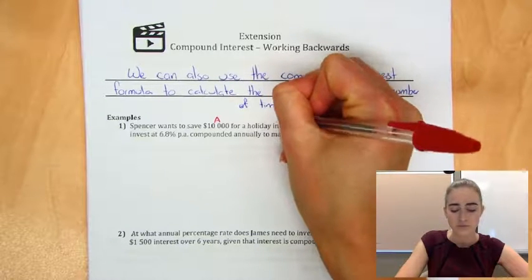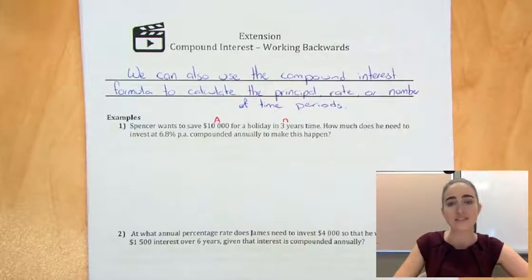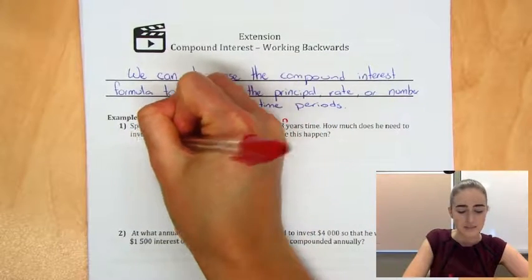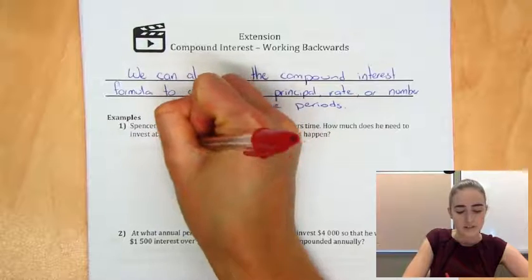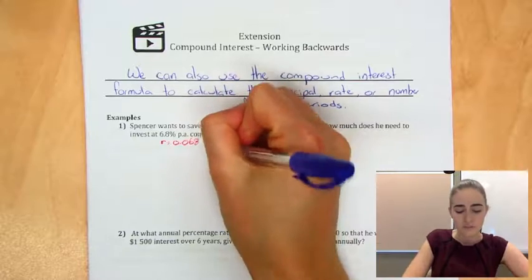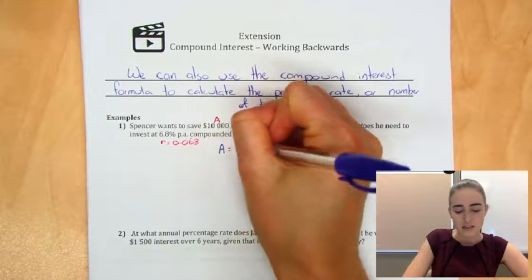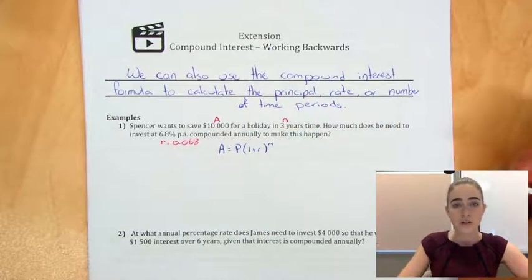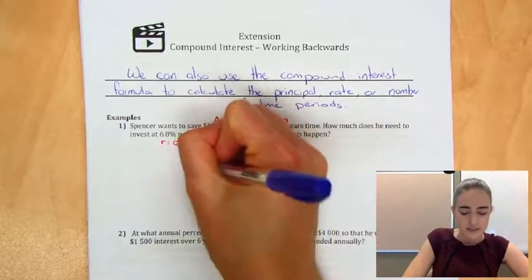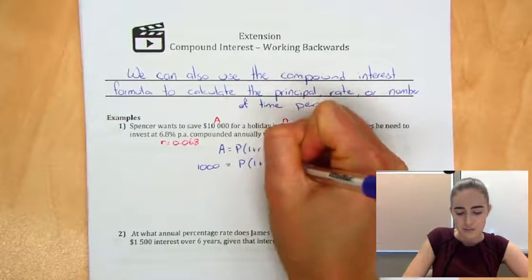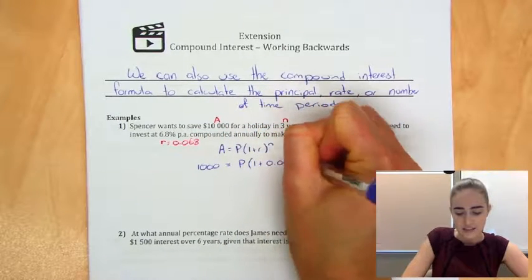We know our number of time periods is three years. And we know that our rate is that 6.8%, so it would be 0.068 as a decimal. So if we pop that in our formula, we've got A equals P outside of 1 plus R to the power of N. We'll fill in what we know. So we know our amount is our $10,000 equals P outside of 1 plus 0.068 to the power of N.